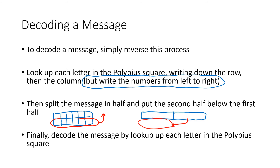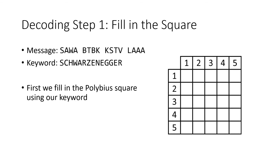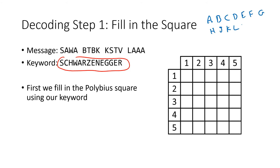Here's a decoding example. We have a message that looks like a bunch of nonsense, encoded with a bifid cipher using a Polybius square based on the keyword 'Schwarzenegger.' The first thing we need to do is fill in our Polybius square using that keyword. I'll write out the alphabet to the side to help keep track and make sure I don't accidentally duplicate any letters — remembering to skip over J.